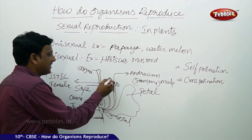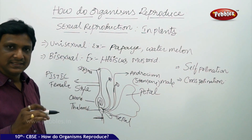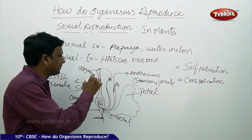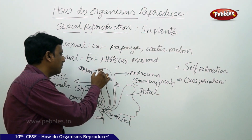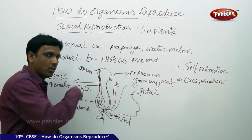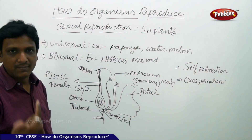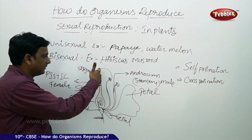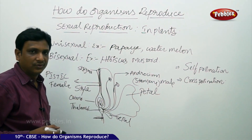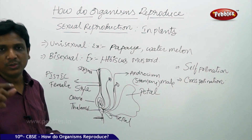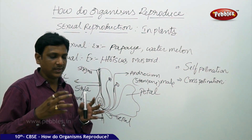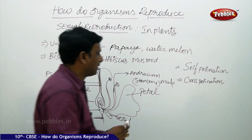Once the pollen reaches the stigma from the anther, the stigma's sticky substance enables the pollen to stick. The pollen then produces a tube called the pollen tube, which grows and extends down through the style into the ovary. The male gametes present in the pollen travel through this pollen tube and finally reach the ovule. Inside the ovule, the male gametes enter and fuse with the female gamete to form the zygote.